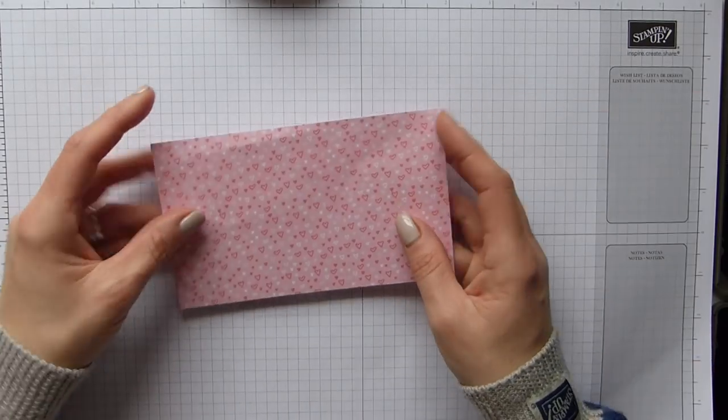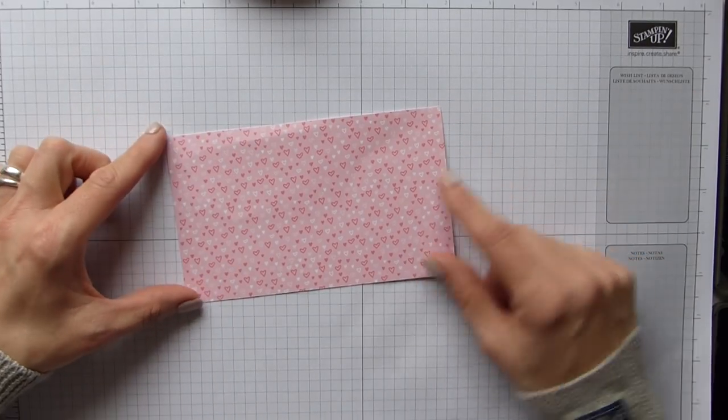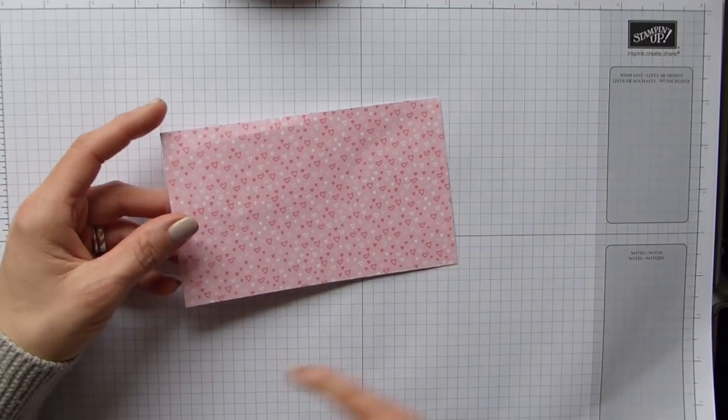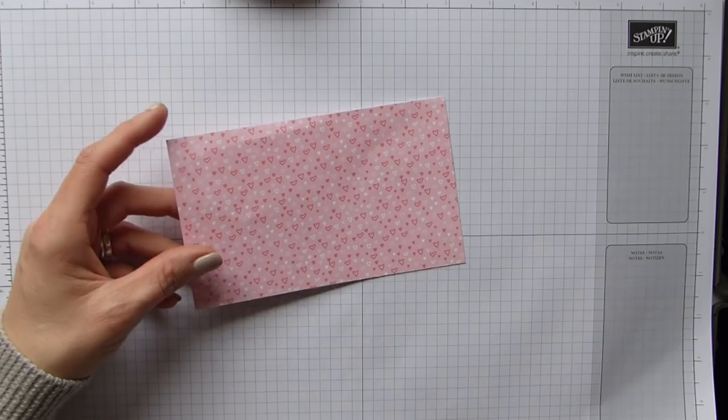So to start off with, you're going to need some DSP that is six and a quarter by three and three quarters, and in centimeters that will be 15 by nine.